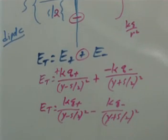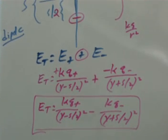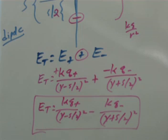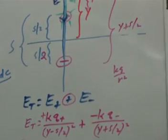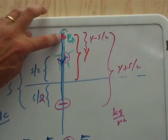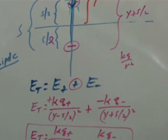Your book or instructor may have different goals — there are ways of simplifying this using a binomial approximation. But here's your first electric field superposition problem. This expression is the total electric field at the red point due to the two charges in this dipole orientation.